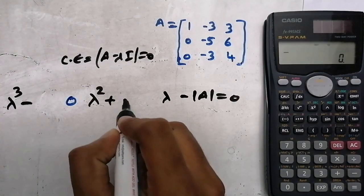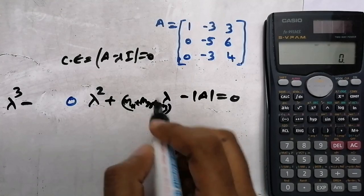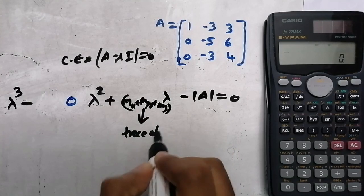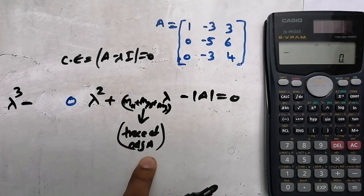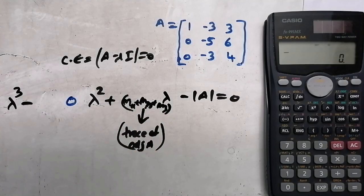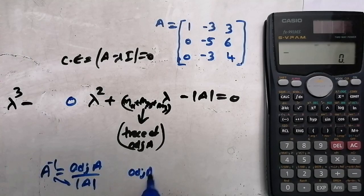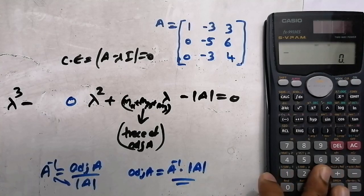The coefficient of lambda is the sum of M11 plus M22 plus M33, which equals the trace of the adjoint matrix A. We know that A inverse equals adjoint of A divided by determinant of A. So adjoint of A equals A inverse multiplied by determinant of A. We can find both these values from the calculator.